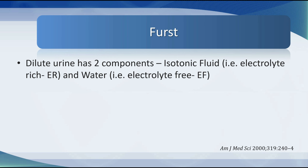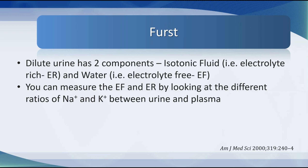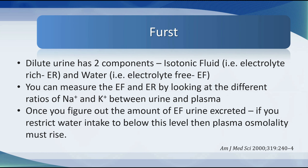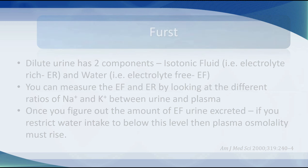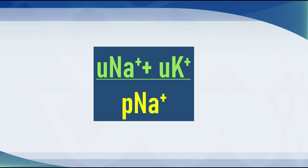One approach to hyponatremia in this setting was developed by Furst, originally published around the year 2000. Furst claimed that dilute urine has two components: isotonic fluid, which is electrolyte-rich, and water, which is electrolyte-free. You can measure these components by looking at the ratios of sodium and potassium between urine and plasma. Once you figure out the amount of electrolyte-free urine excreted and restrict water intake below this level, plasma osmolality must rise. The calculation is: urinary sodium plus urinary potassium, divided by plasma sodium.